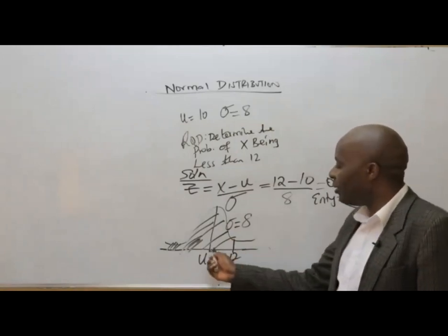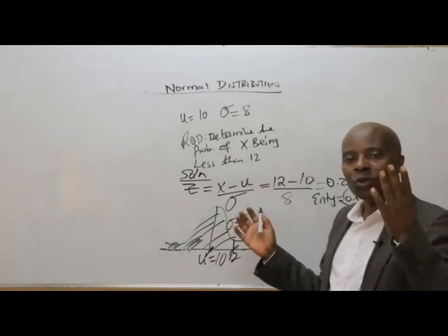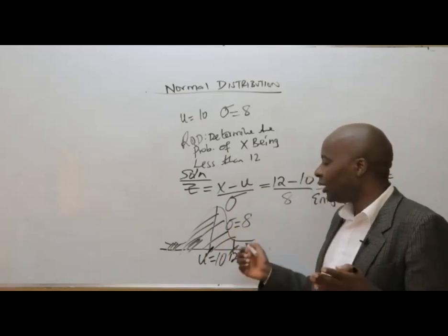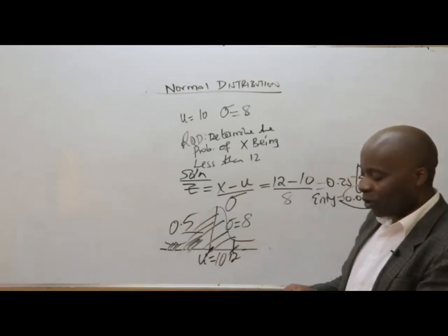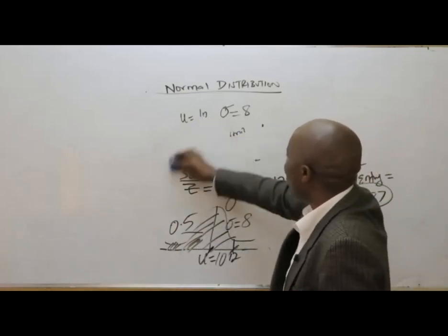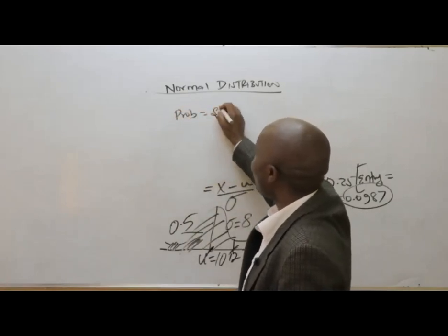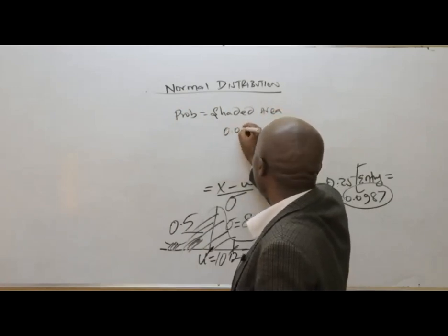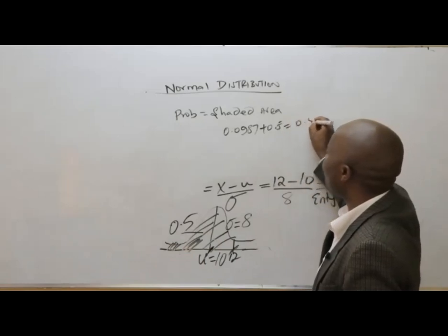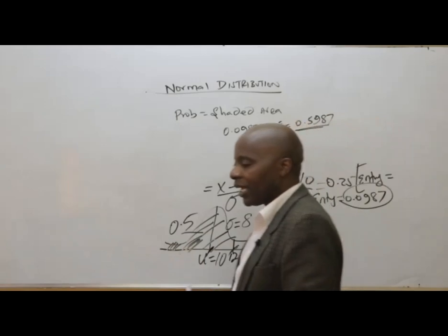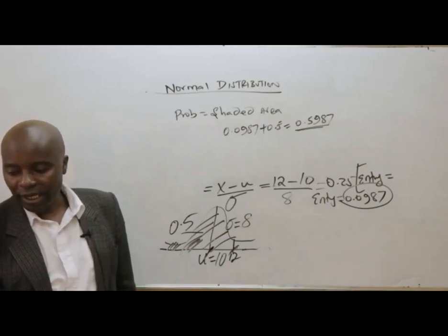Once I have this entry figure, remember that the entry figure is the area between the mean (10) and 12. But they want the total shaded area. Fortunately, the left half area is equivalent to 0.5. Therefore, the probability of getting a value less than 12 equals 0.0987 plus 0.5, which gives us 0.5987. That is the answer: 0.5987.